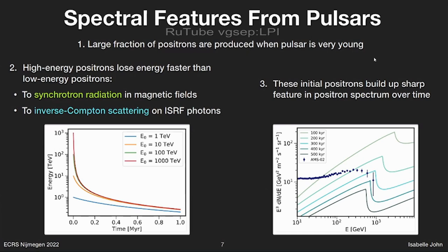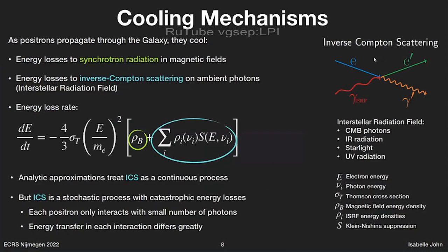In this plot, we see the energy of the positron as a function of time. For example, the red line — a positron with an initial energy of 1000 TeV — loses most of its energy in just the first 100,000 years. The blue line, a positron starting at 1 TeV, only loses a much smaller fraction of its energy in the same time. So many positrons produced at different energies all cool down to the same energy given enough time. We can also see this in the spectrum at different ages: the feature moves to lower energies over time and becomes stronger as more positrons cool down to that energy.